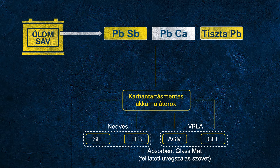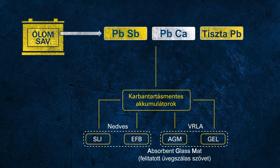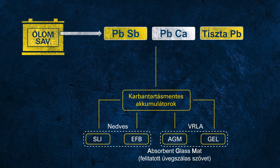AGM stands for absorbent glass mat, which indicates the main technological difference from a flooded battery. In this kind of battery, the electrolyte is no longer free but fixed — absorbed in a glass mat separator. Each cell of an AGM battery is sealed from the environment to ensure proper function, and every cell is equipped with a separate valve to release potential unwanted overpressure, avoiding permanent damage. This construction and function principle provides higher performance and reliability than a flooded battery.